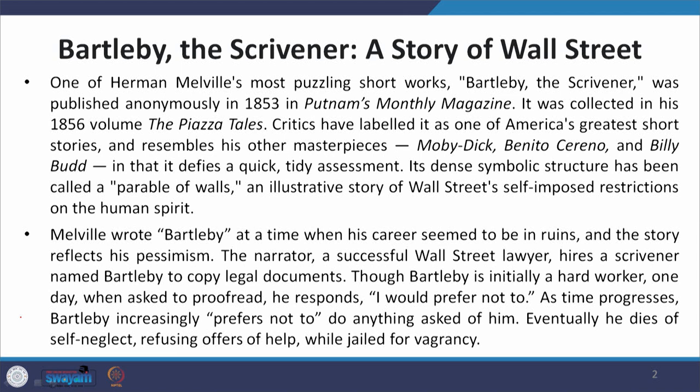The narrator, who is a successful Wall Street lawyer, hires a scrivener named Bartleby to copy legal documents. Though Bartleby is initially a hard worker, one day when asked to proofread, he responds to the lawyer: 'I would prefer not to.' As time progresses, Bartleby increasingly prefers not to do anything asked of him, and eventually dies of self-neglect, refusing offers of help while jailed for vagrancy. He makes a wall around him, neither helping others nor seeking help, and wastes away and dies.